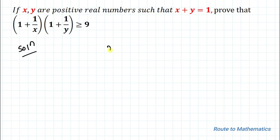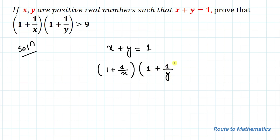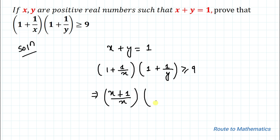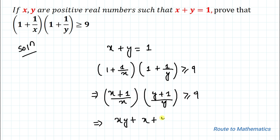So we are given x plus y equals 1, and we are asked to prove (1 + 1/x) multiplied with (1 + 1/y) greater than or equal to 9. We can rewrite this as (x + 1)/x multiplied with (y + 1)/y greater than or equal to 9.